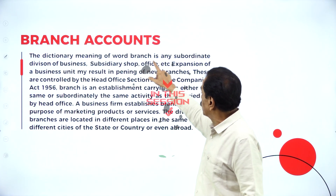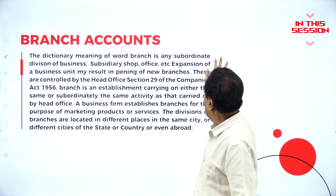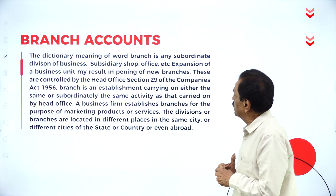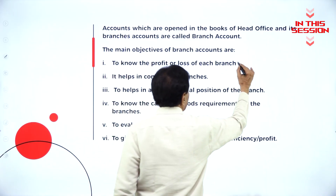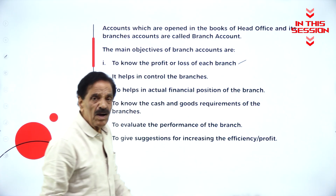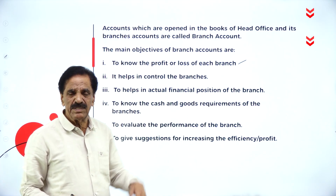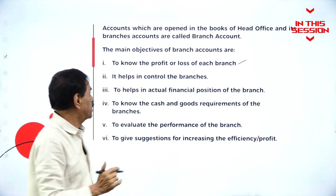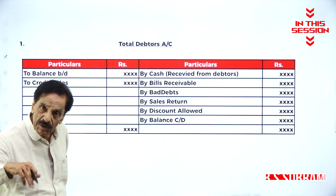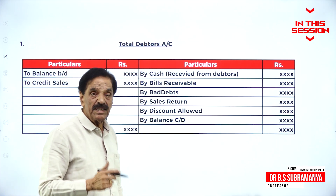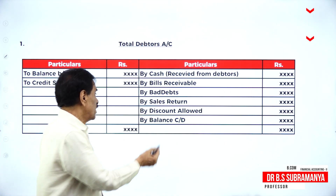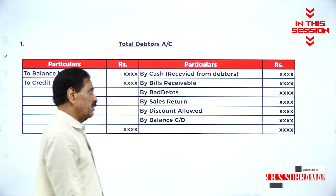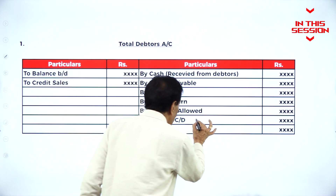The dictionary meaning of the word 'branch' is any subordinate division of business, subsidiary shop, office, etc. To know the profit or loss of each branch — if we have four or five branches, we are going to find out the profit or loss of each branch. Bad debt means irrecoverable money, sales return, goods returned by customer, discount allowed. Whatever the difference comes, this is called closing balance.